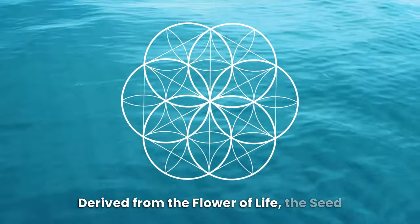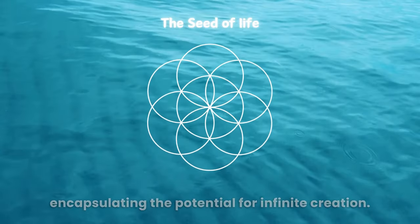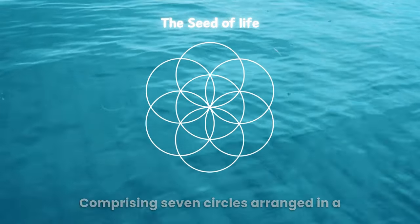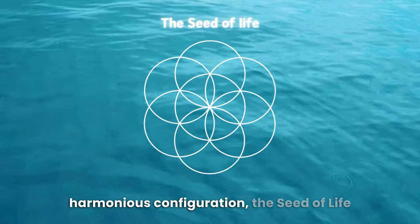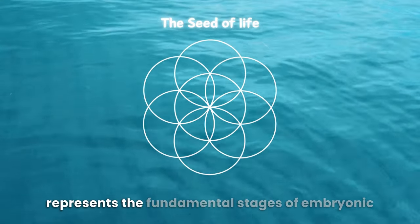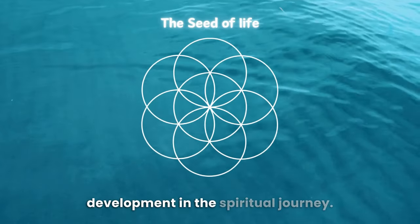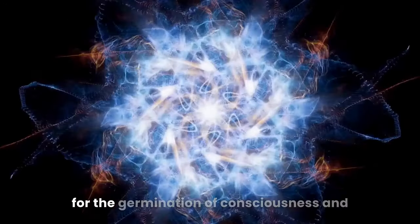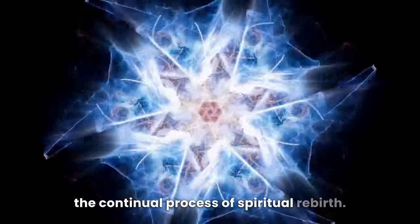Derived from the flower of life, the seed of life is a symbol of sacred genesis, encapsulating the potential for infinite creation. Comprising seven circles arranged in a harmonious configuration, the seed of life represents the fundamental stages of embryonic development. In the spiritual journey, this geometric marvel is a metaphor for the germination of consciousness and the continual process of spiritual rebirth.